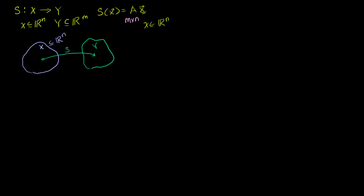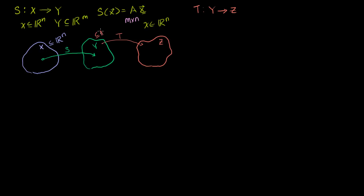Now let's say we have another linear transformation T, which is a mapping from the set Y to the set Z. I have another set Z here, and I can map from elements of Y into elements of Z using the linear transformation T. Y is a subset of Rᵐ, and let's say Z is a subset of Rˡ.